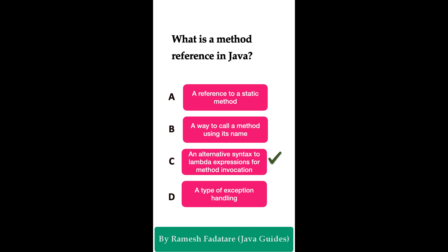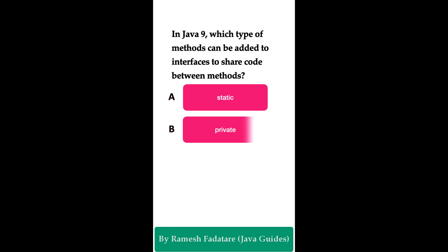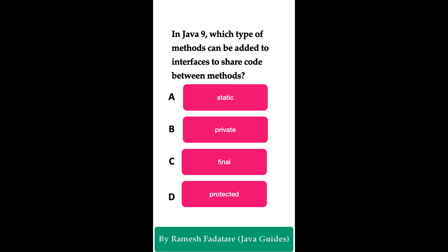In Java 9, which type of methods can be added to interfaces to share code between methods? Option A: static methods. Option B: private methods. Option C: final methods. Option D: protected. The correct answer is private methods. Starting from Java 9, interfaces can have private methods, which help share code between methods without exposing them to external classes. Java 8 onwards allows static and default methods in interfaces; Java 9 onwards also allows private methods. These private methods can be called within default methods of the interface.